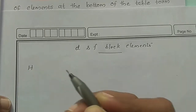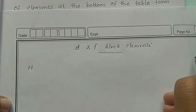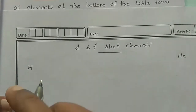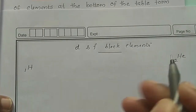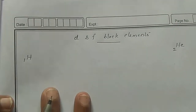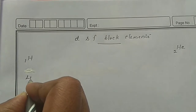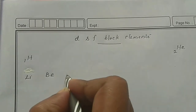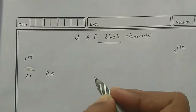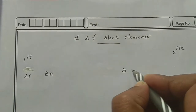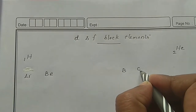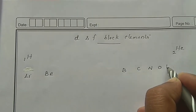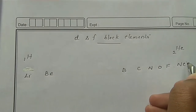In the periodic table, the first element is Hydrogen with atomic number 1, and the second element is Helium with atomic number 2. Then Lithium, Beryllium, Boron, Carbon, Nitrogen, Oxygen, Fluorine, and Neon complete the first two periods.